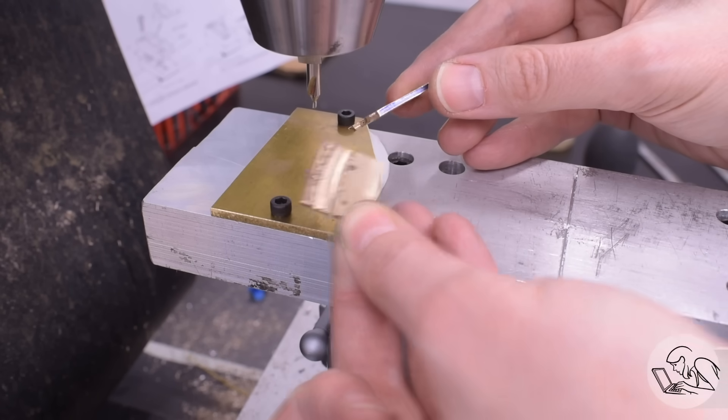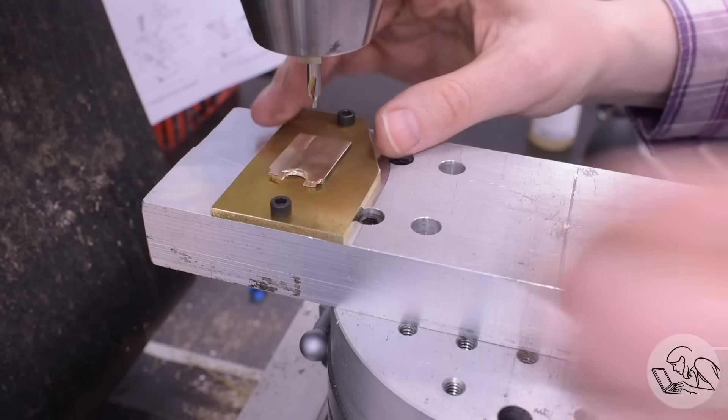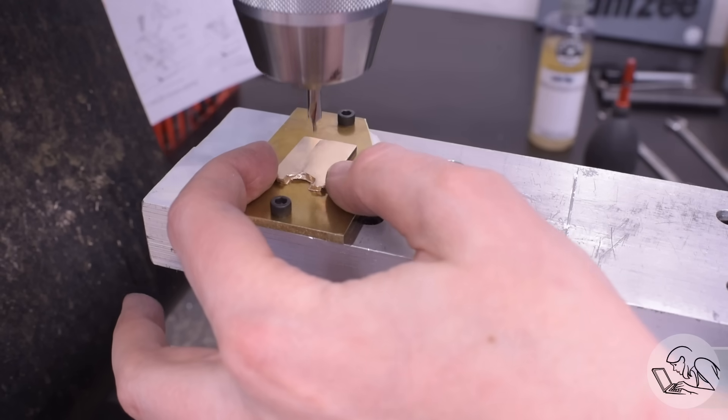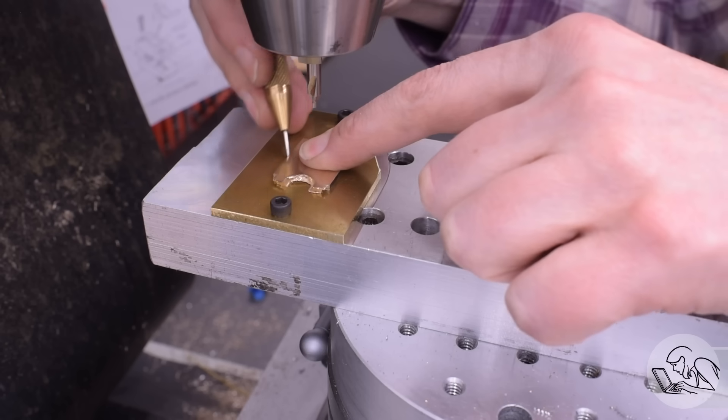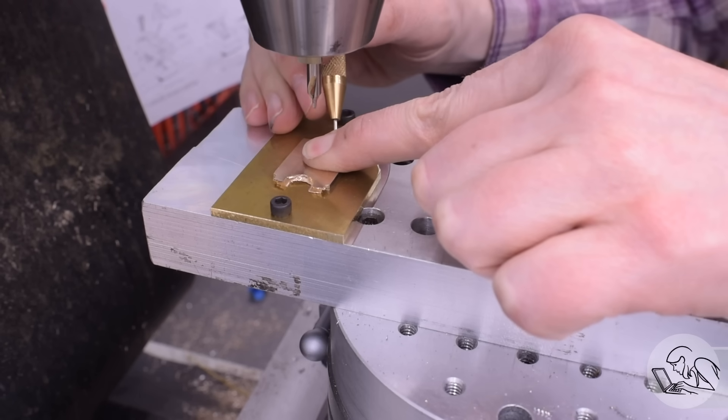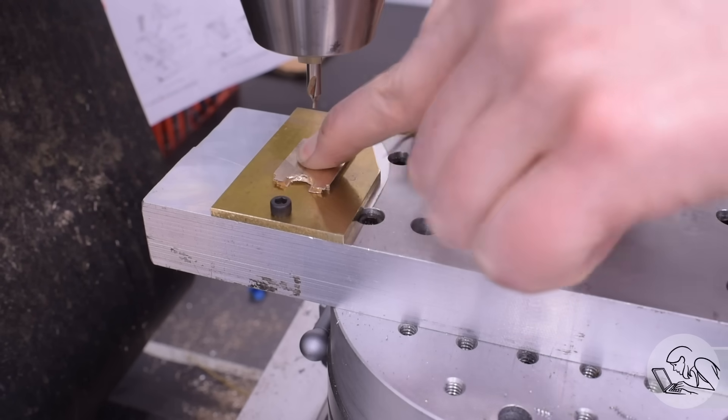Luckily, I still have plenty of that main bearing material left. So I cut another slice off of that, machined it to thickness once again. And once again, I'm centering it on the spindle. However, instead of gluing it down, I'm going to trace the outline of it with a scriber so that I know where to solder it into place.